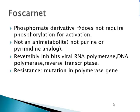Foscarnet is not an anti-metabolite. Unlike most antiherpetic drugs, Foscarnet is a phosphoformate derivative rather than a nucleoside analog, and therefore does not require phosphorylation for activation. It reversibly inhibits viral DNA polymerase, RNA polymerase, and reverse transcriptase. Resistance arises from mutations in the polymerase gene.